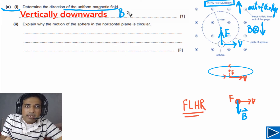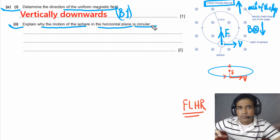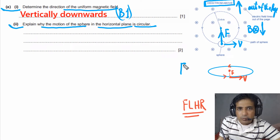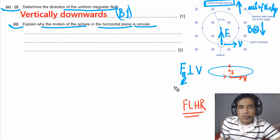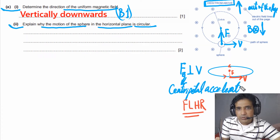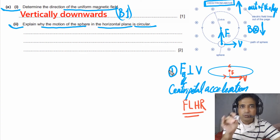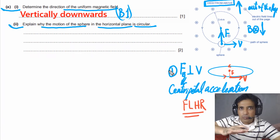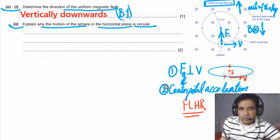For part a2, we need to explain why the motion of the sphere in the horizontal plane is circular. The magnetic force acts perpendicular to the velocity, so the angle between the magnetic force and velocity is 90 degrees. A force acting at 90 degrees to the motion causes centripetal acceleration, making the particle move in a circle. Since the force is perpendicular to velocity and its magnitude is constant, the particle moves with constant speed in a horizontal circle.